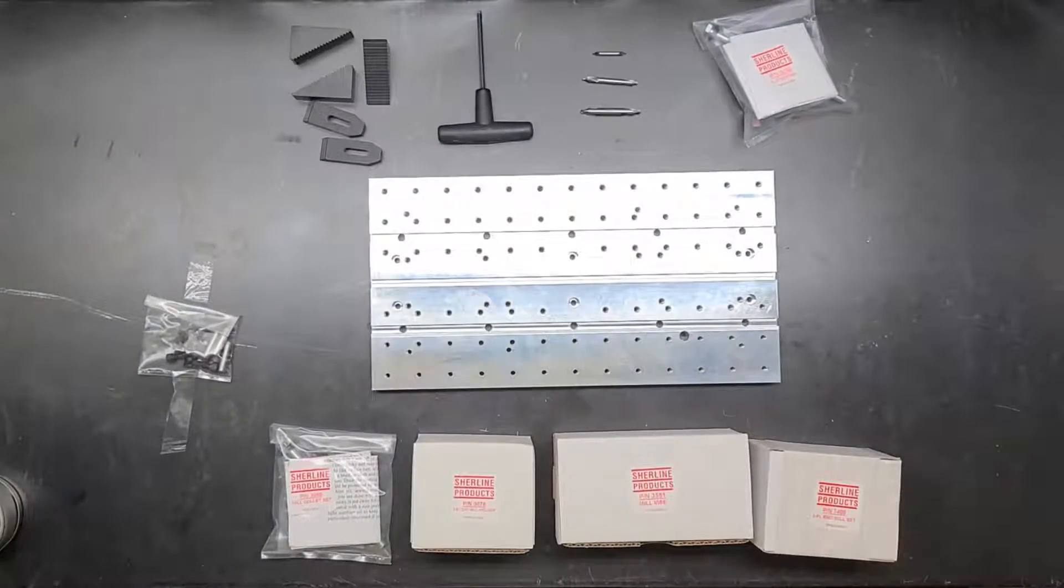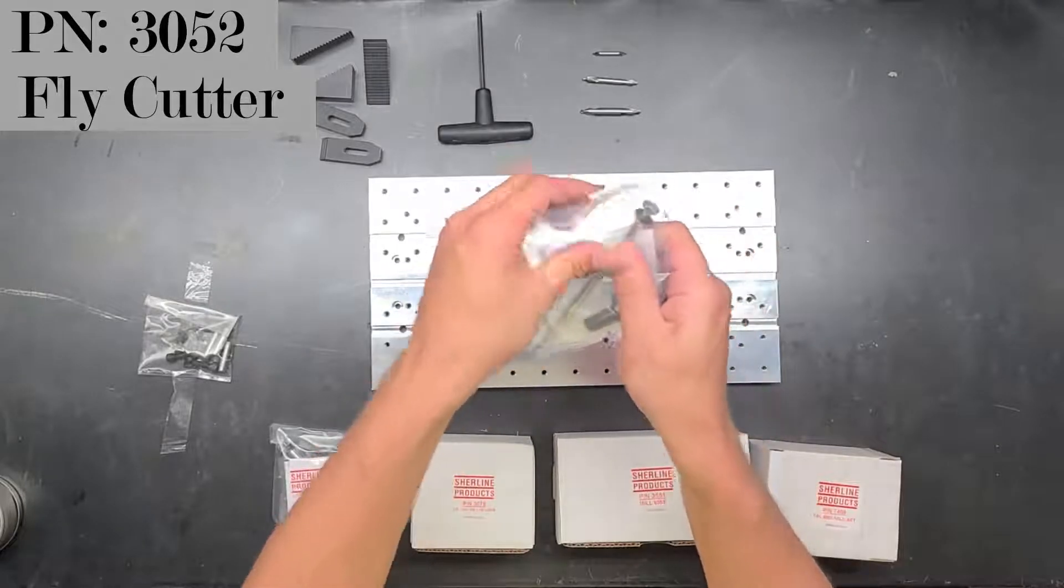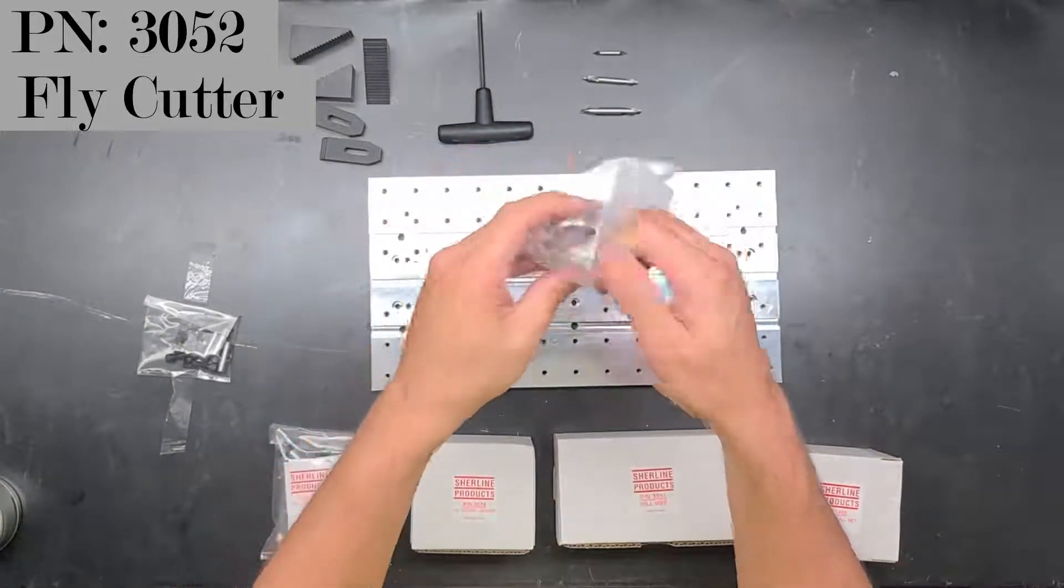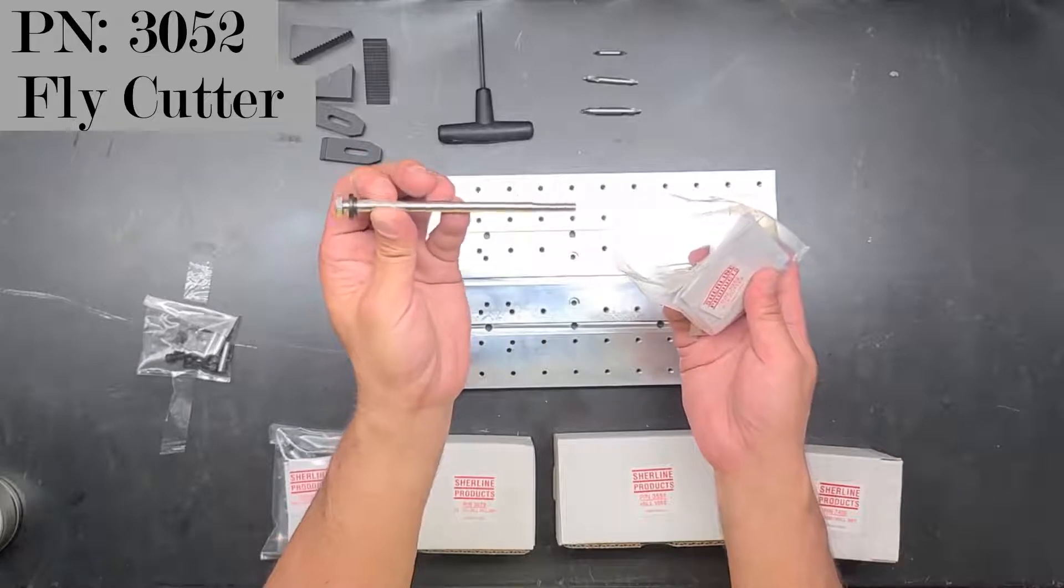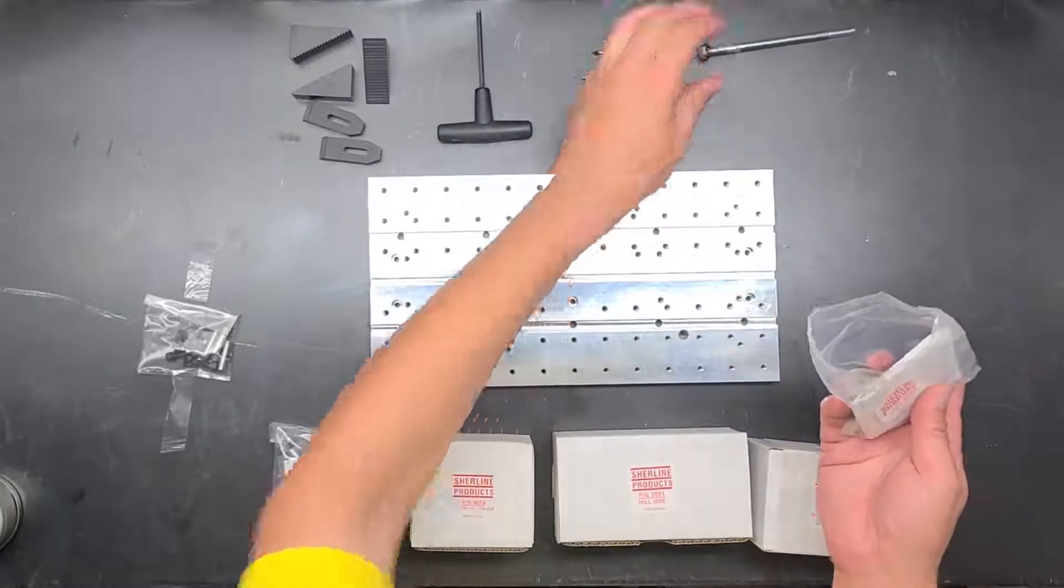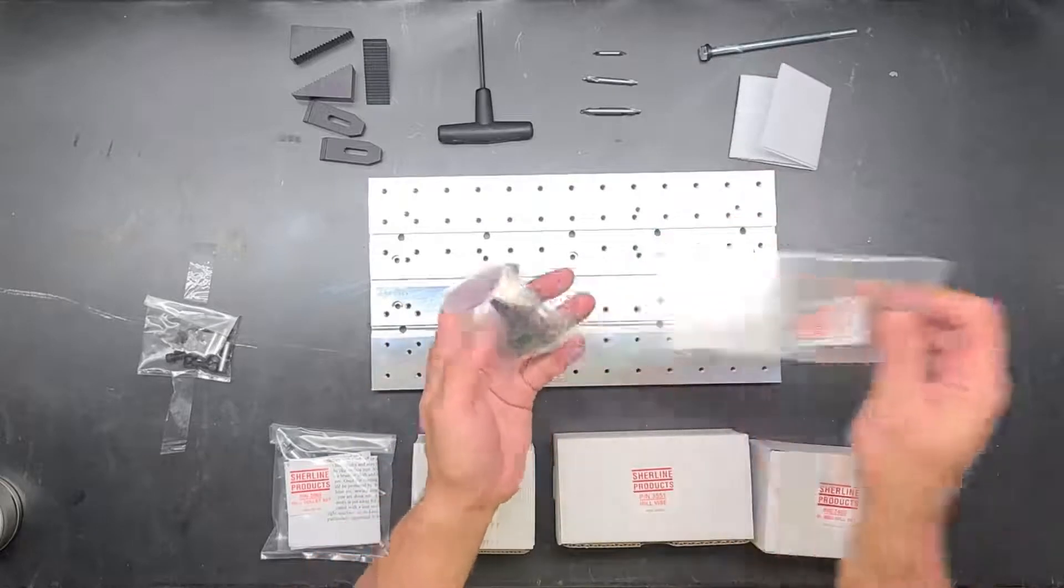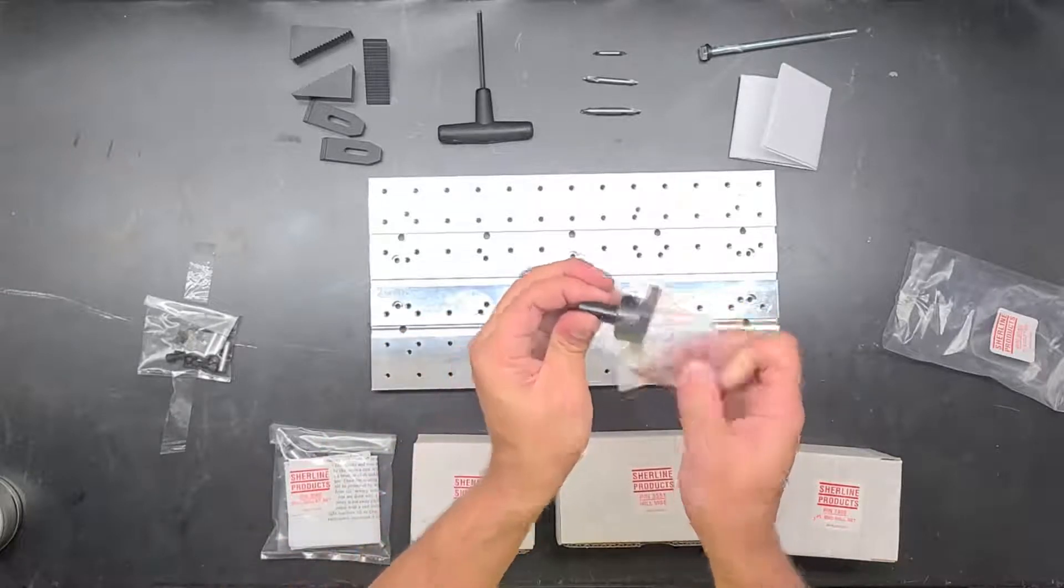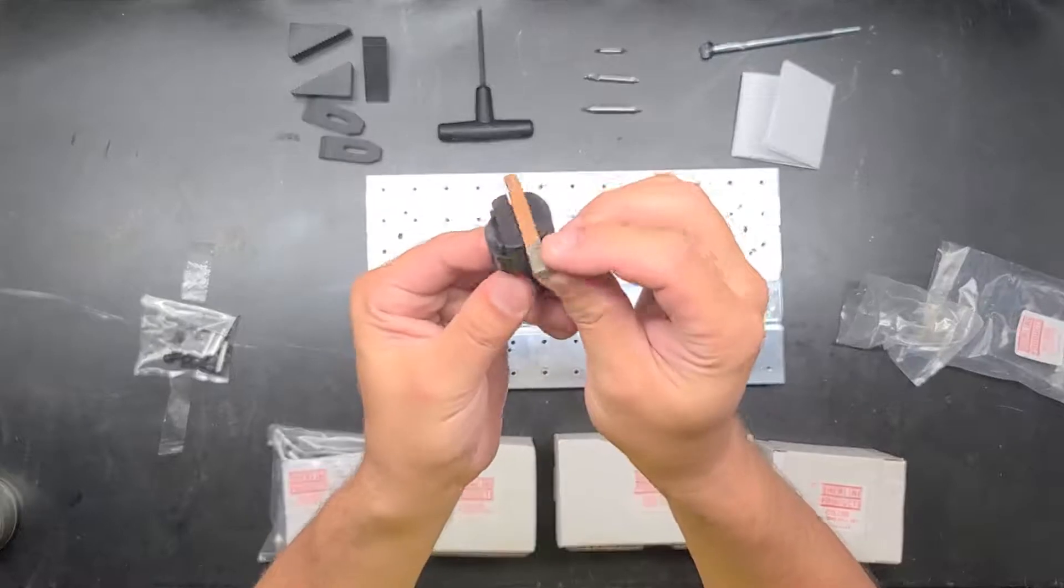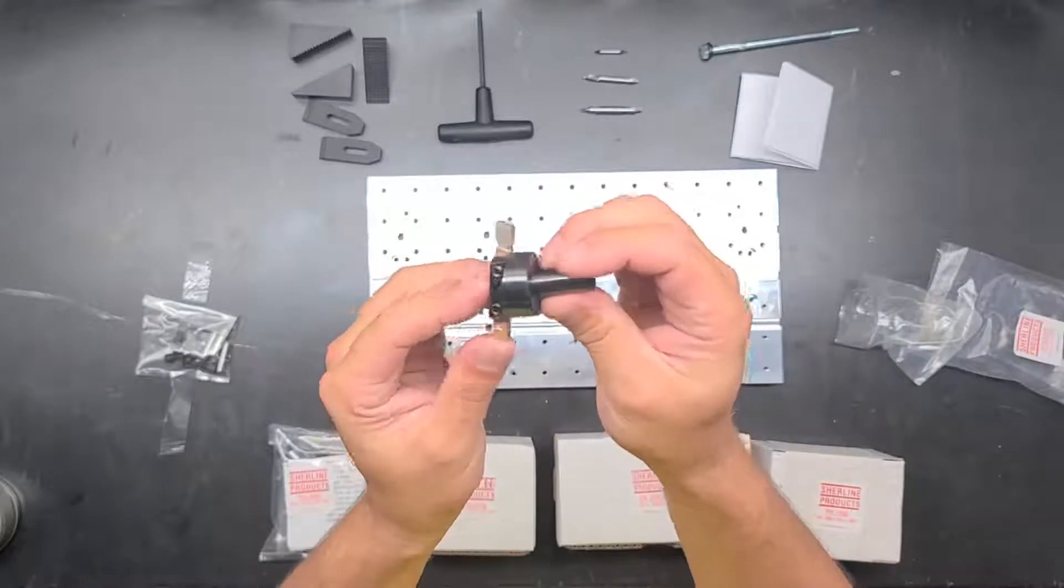Now we're really getting into mill specific stuff. I've got a 3052 fly cutter. This guy right here. Comes with another draw bar and it's identical for the one that works with the Jacobs chuck. Another set of instructions. And then the fly cutter. It's got a brand new and covered in wax here, brazed carbide insert.